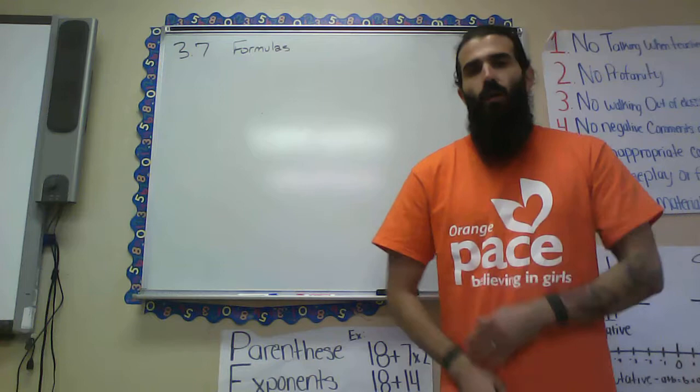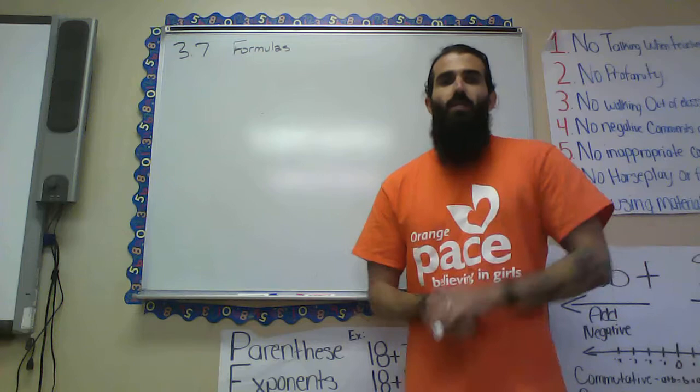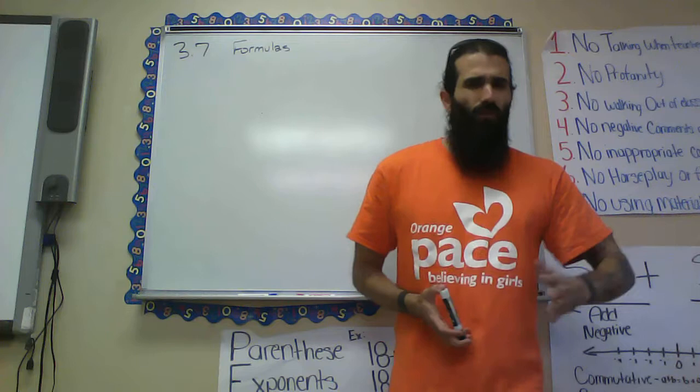Earlier in the chapter we've looked at solving equations for a variable — multi-step problems for a single variable — and then solving when the variable is on both sides, where you have to combine like terms in your variables on each side of the equation.